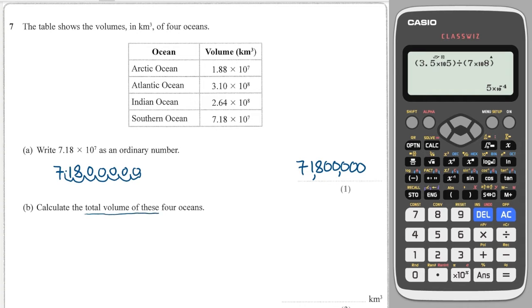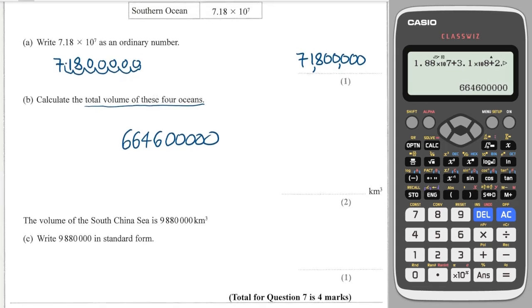Next I'm asked to find the total volume of the four oceans. So I'll take my calculator and just add these up. I'll do 1.88 times 10 to the 7, plus 3.1 times 10 to the 8, plus 2.64 times 10 to the 7, and I get 6, 6, 4, 6 with 1, 2, 3, 4, 5 zeros. And that is that question done.